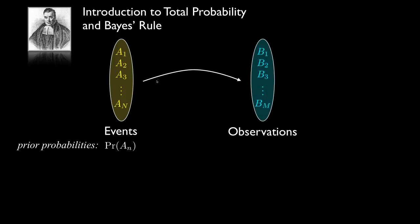Now let's think about a situation where you can't observe the event directly. One of these events occurs but we don't observe that. Instead, we observe another event from a different set of events — we'll call those the observations. So for instance, A2 might occur and then we might observe event B3 among our observations.